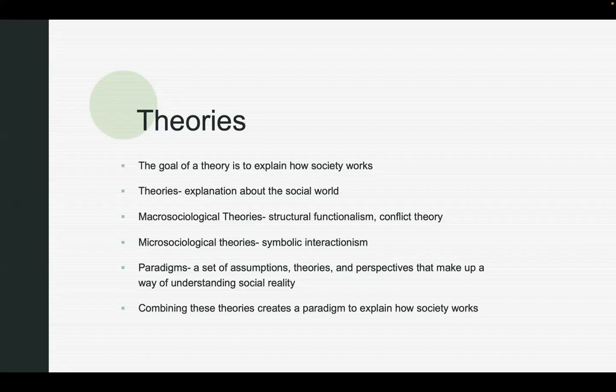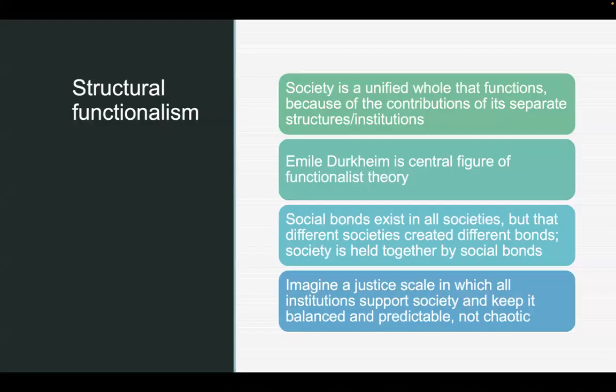Each of the theories we'll talk about today are essentially paradigms — ways of viewing the social world. We can also combine these theories to create a paradigm to explain how society works. There are aspects of functionalism, conflict theory, and symbolic interactionism that all go together. It's individuals who created things like the economy, and the economy exists for a reason — functionalism — but it also creates conflict. That's the blending of all three theories right there.